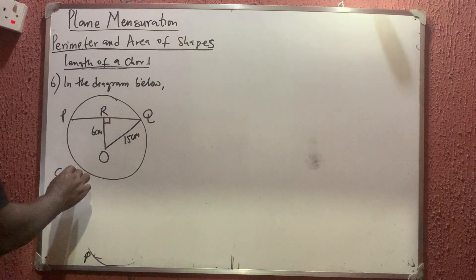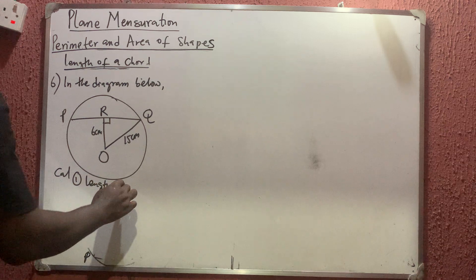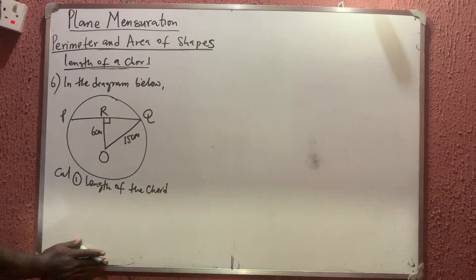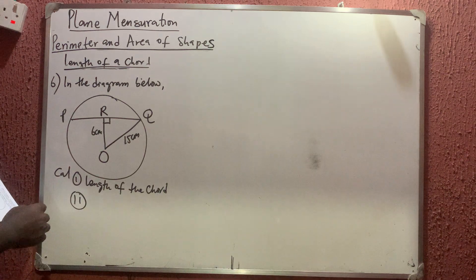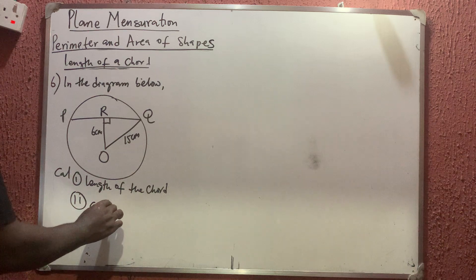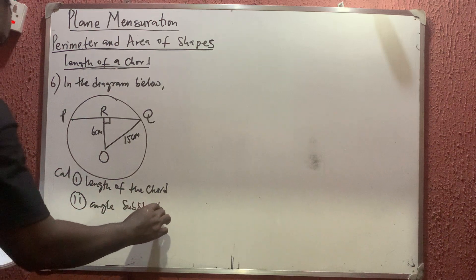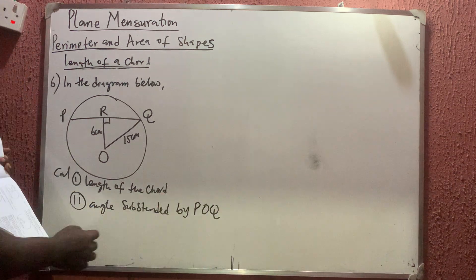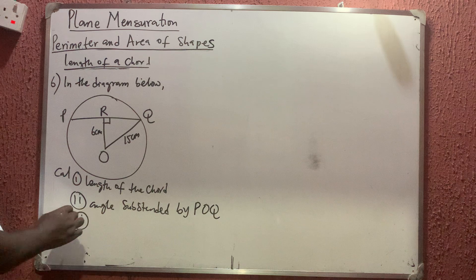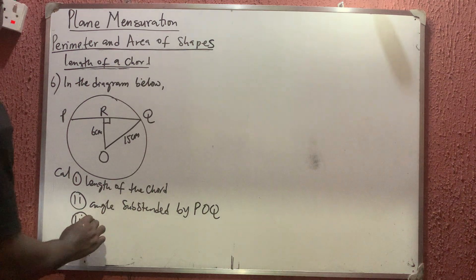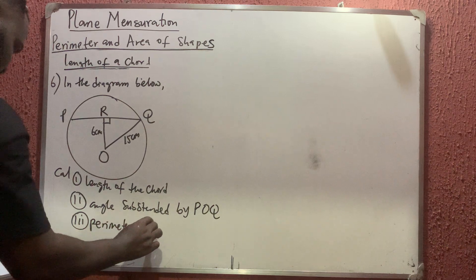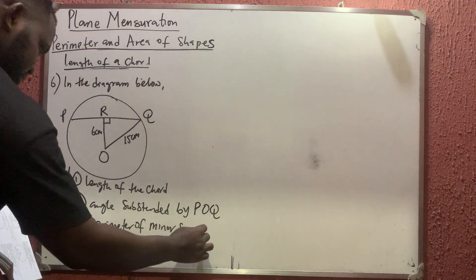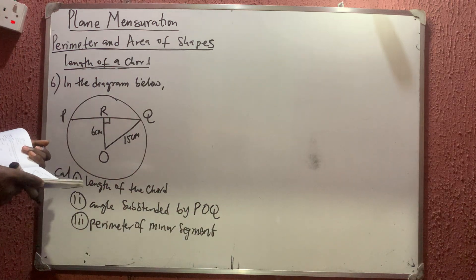They say we should calculate: (i) the length of the chord, (ii) the angle subtended by POQ, and (iii) the perimeter of the minor segment.